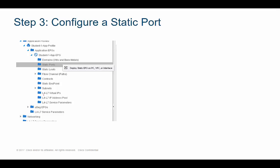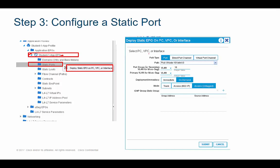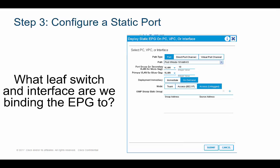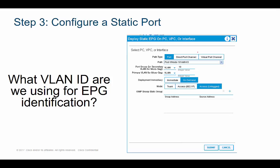Let's look at what step three looks like. In the APIC GUI, I'm in my EPG, I expand it, go under Static Ports, right-click it, and configure the static port — a window pops up. Scanning this screenshot: we're binding the EPG to leaf 101 interface 1/3. The VLAN ID we are using to identify traffic within the EPG on that port is VLAN 10.